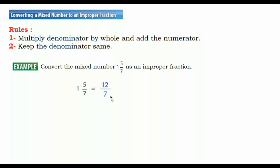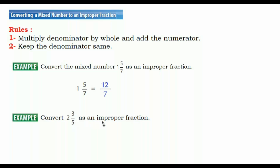Let's see another example. Convert 2 and 3 over 5 as an improper fraction. First, we write the mixed number 2 and 3 over 5. We multiply the denominator by the whole: 5 times 2 equals 10, then add the numerator: 10 plus 3 equals 13. The answer is 13 over 5.